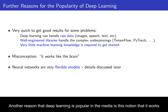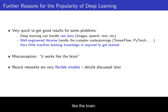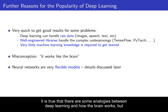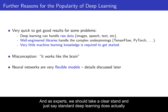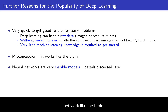Another reason that deep learning is popular in the media is this notion that it works like the brain. However, this is actually largely hype. It is true that there are some analogies between deep learning and how the brain works, but there are also a lot of differences — more differences than similarities. As experts, we should take a clear stand and say that standard deep learning does not actually work like the brain.